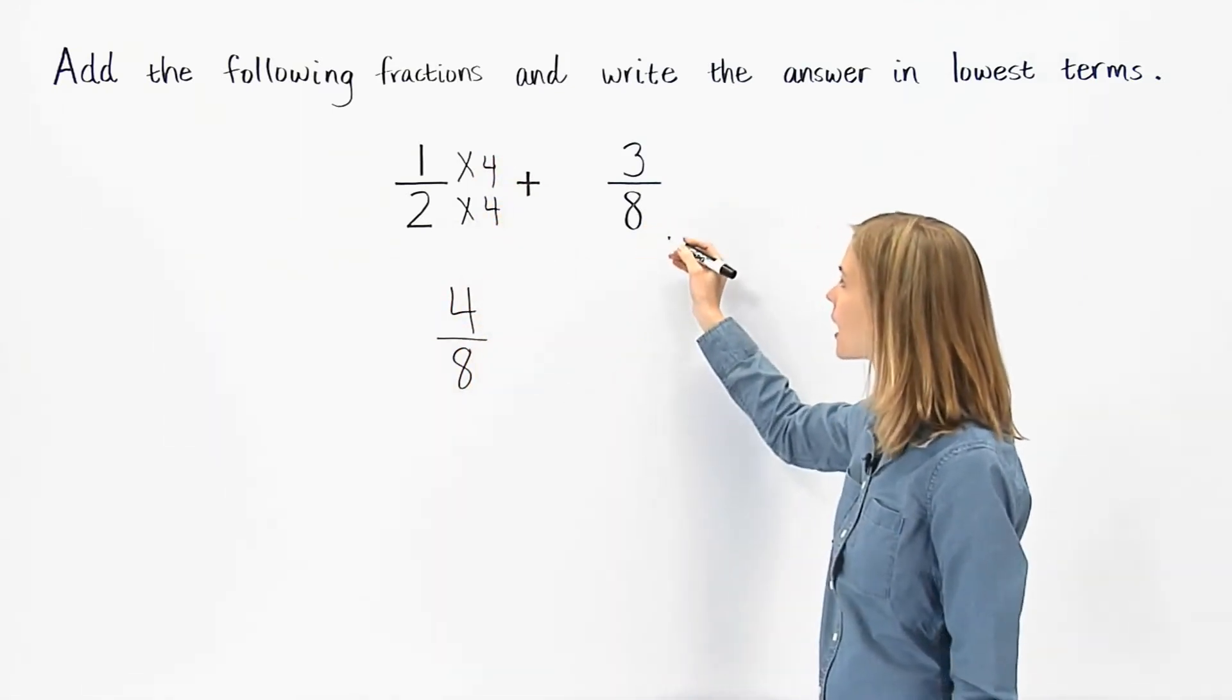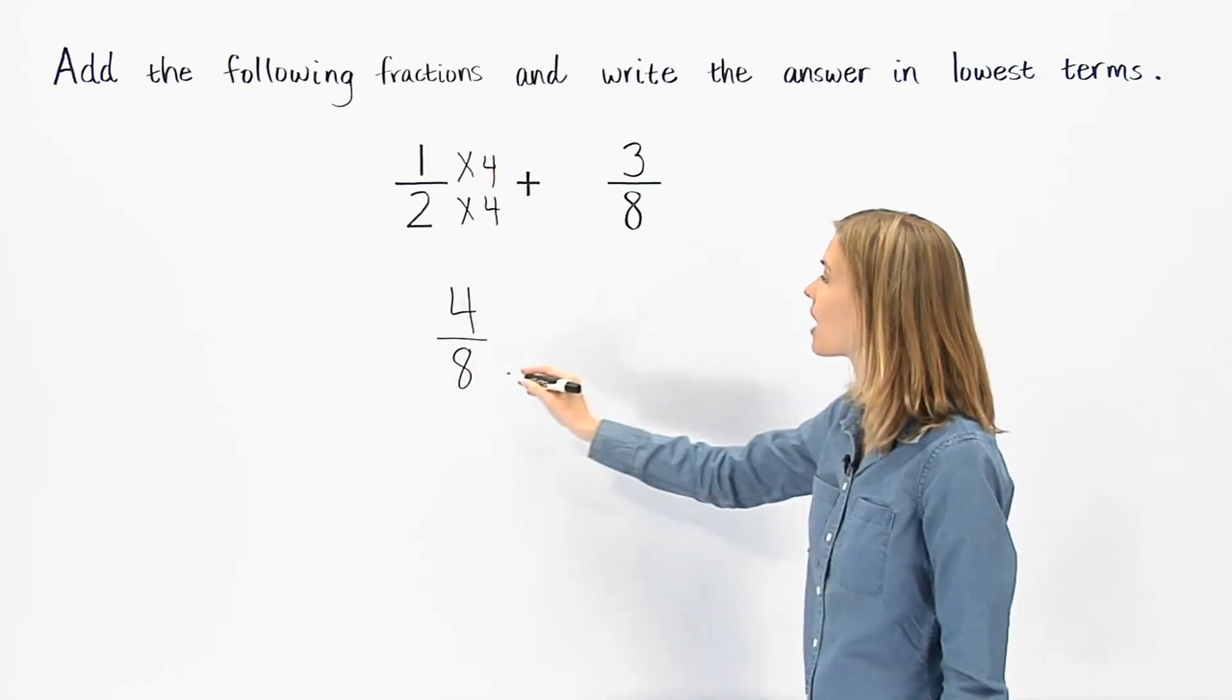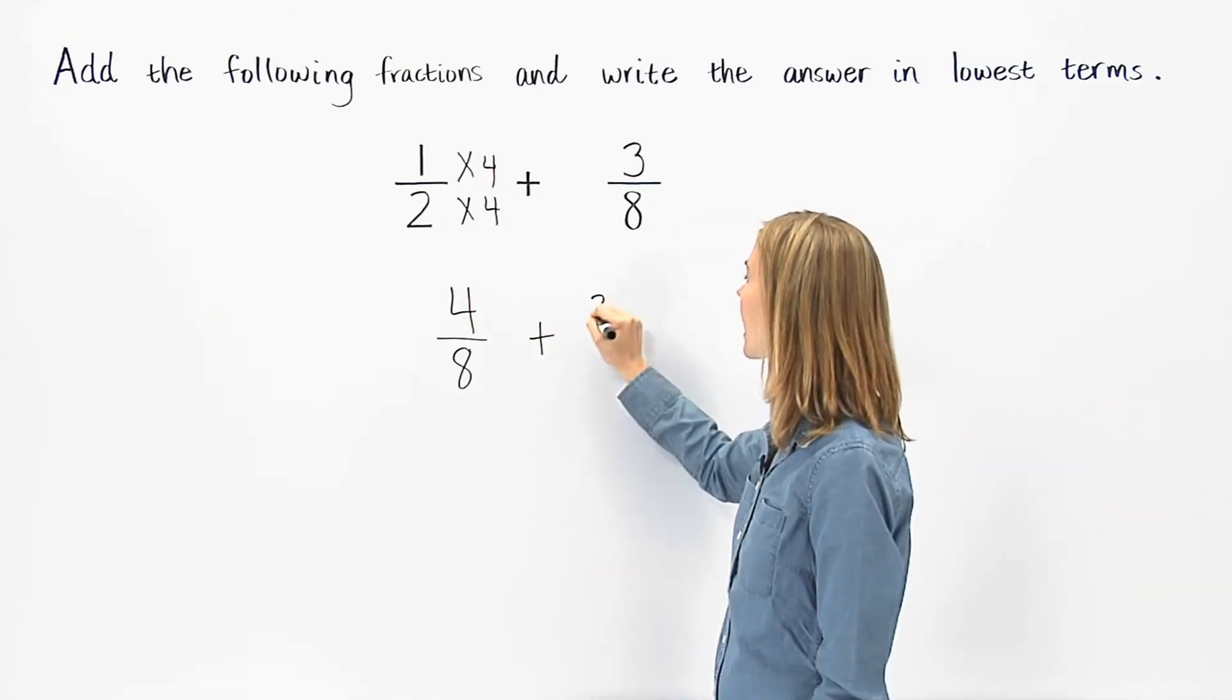Notice that our second fraction already has 8 in the denominator, so we have 4 eighths plus 3 eighths.